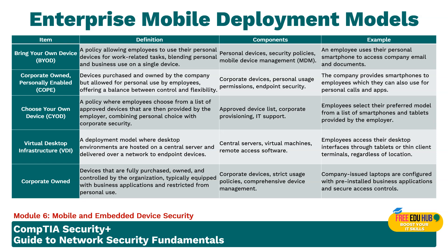Corporate Owned Personally Enabled (COPE) devices are purchased and owned by the company but allowed for personal use by employees, offering a balance between control and flexibility. These are corporate devices for personal usage, with endpoint security and organizational control. The company provides smartphones employees can use for personal calls, and if the device goes missing, the organization can remotely wipe or delete data from those devices.